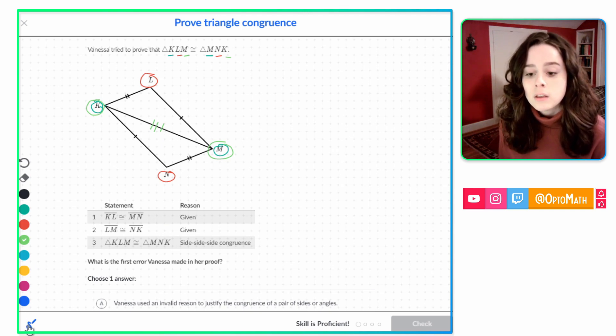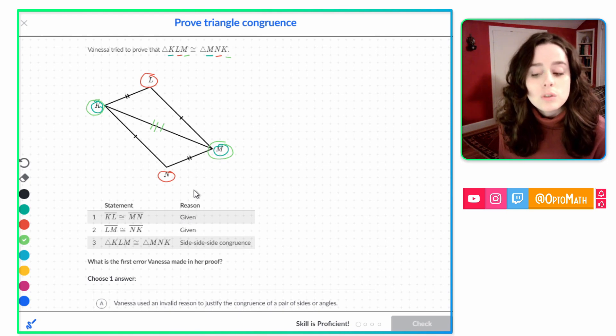Now let's take a look to see what Vanessa said here. So KL is congruent to MN. That's given. Yes, that's true because of the two tick marks. So let's just write that.